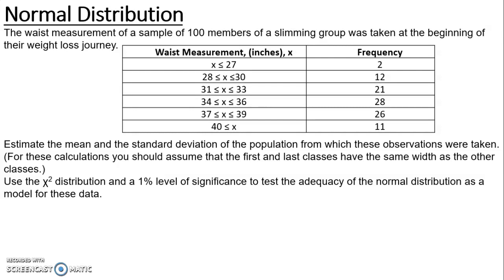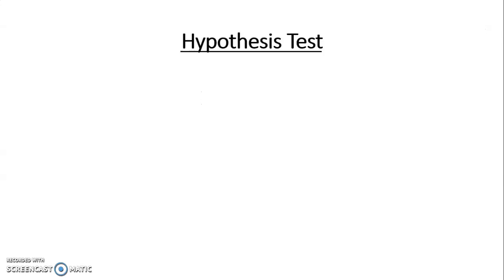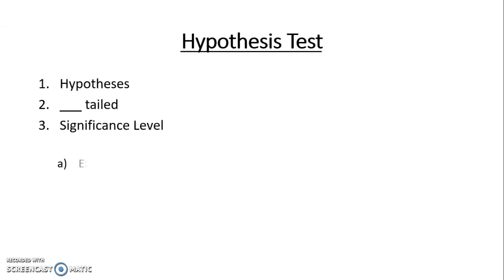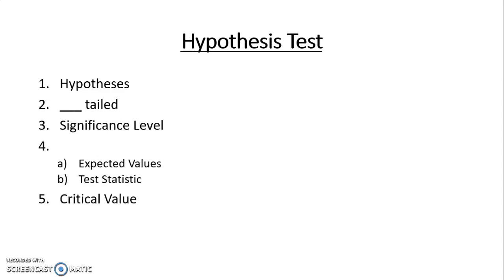As with any hypothesis test we need to look at seven steps: our hypothesis, the tail, the significance level, calculating the expected values so we can get the test statistic, the critical value, then compare these and conclude.